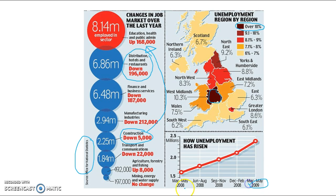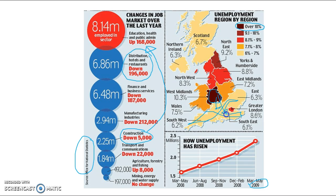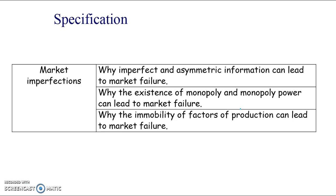Looking at the dates here, we can see the onset of the recession when things were getting really difficult. Here we have unemployment by region — we can see geographical immobility of labour. Areas like the West Midlands had high unemployment, while other areas had relatively low unemployment. But those areas with low unemployment also have some of the highest property prices, making it very difficult for people from the West Midlands to move there and access those job opportunities. So that's market imperfection.